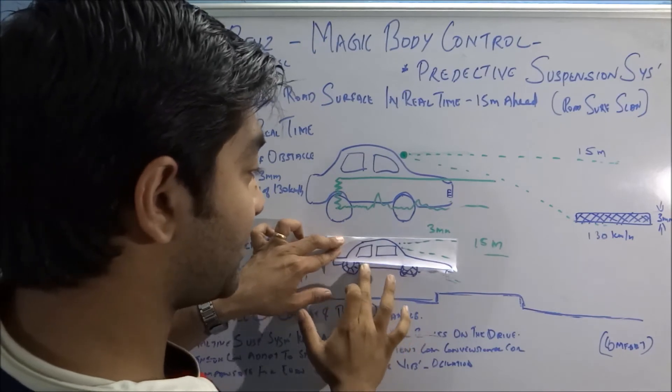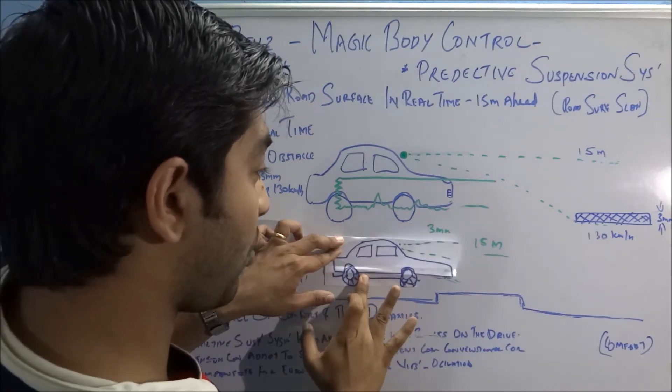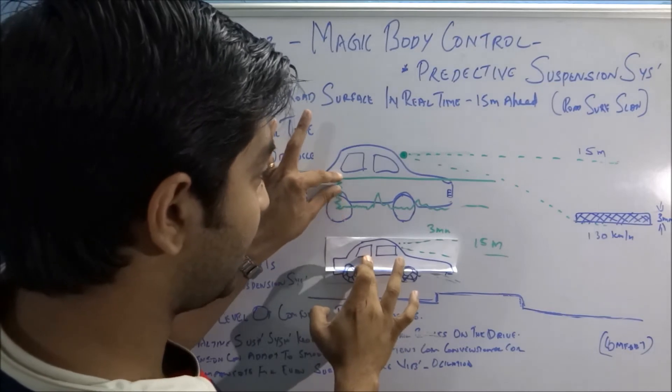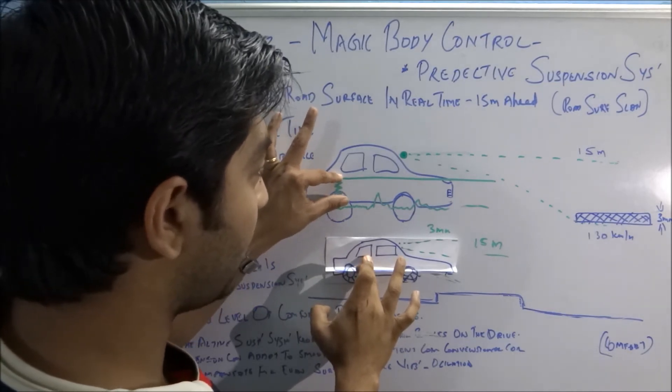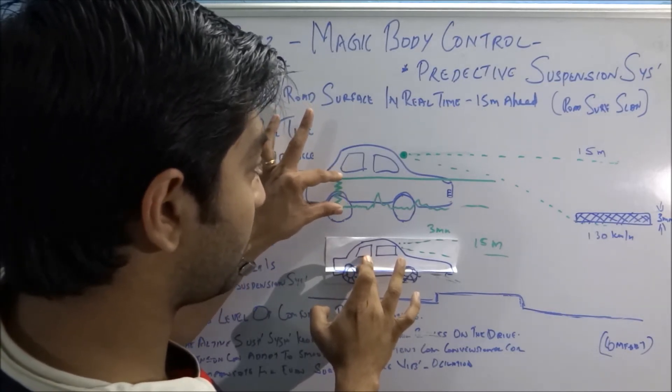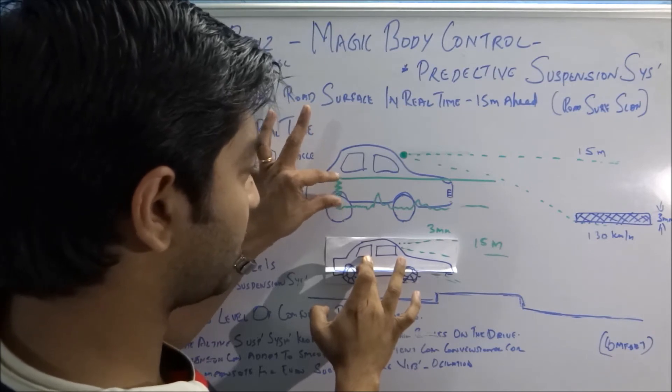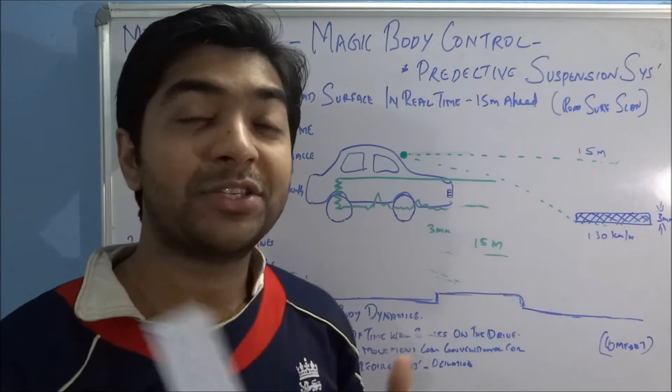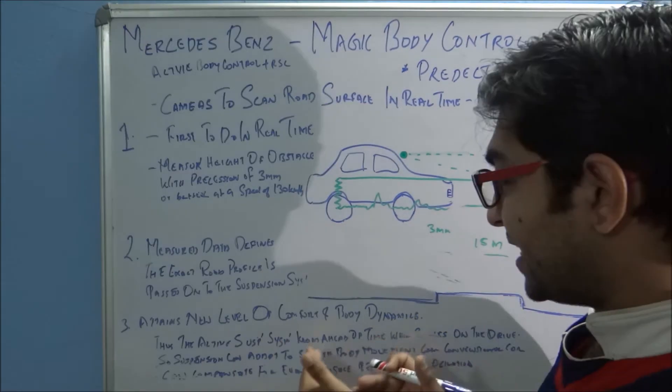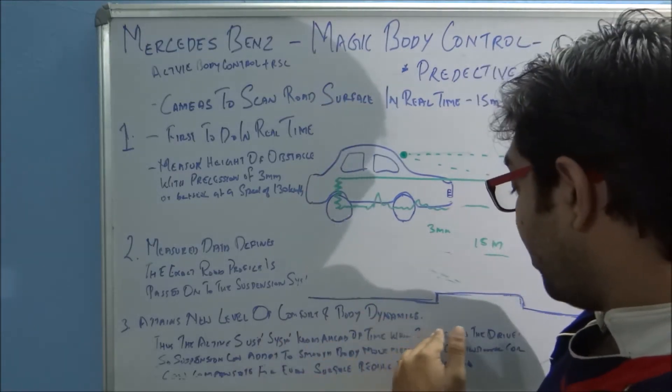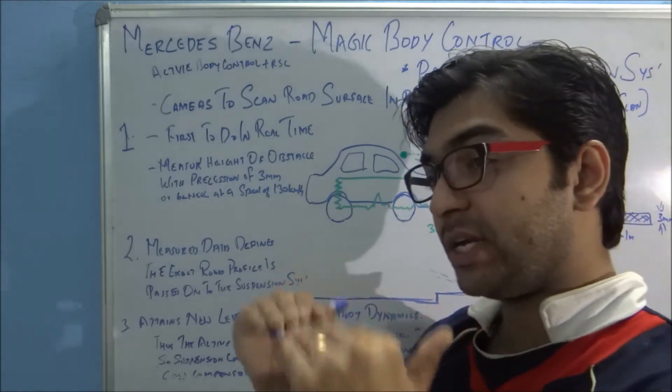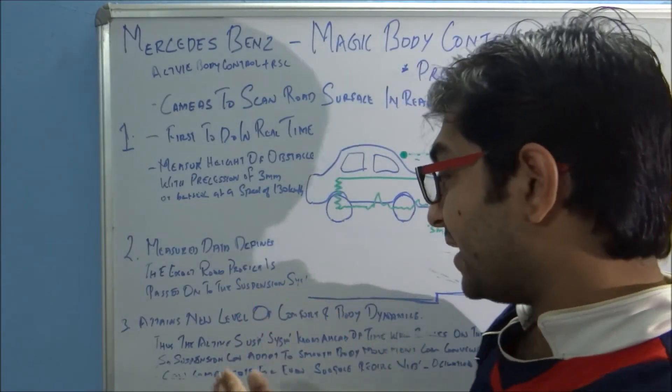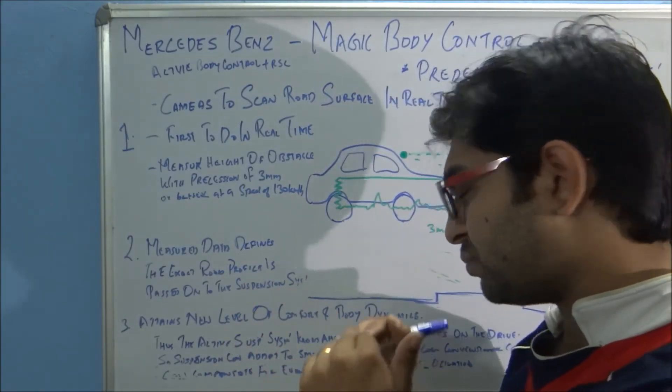Here this is a suspension - it moves up and down and the body remains stationary without much movement or vibration. That exactly gives the perfect comfort and body dynamics to the driver and the passenger. It knows ahead of time where it needs to adjust or where it needs to dance, and the suspension can adapt to the smooth body movement.